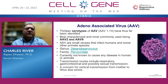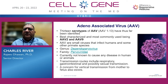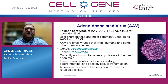Adeno-associated virus — there are 13 serotypes naturally known, AAV1 to 13, and many more recombinant and synthetic ones. The best characterized and most commonly used are AAV2 and AAV9. AAVs are small viruses that infect humans and some other primate species, belonging to the genus Dependoparvovirus and family Parvoviridae. They are not known to cause any disease in humans or animals, which makes it a very attractive platform to use in gene therapy.